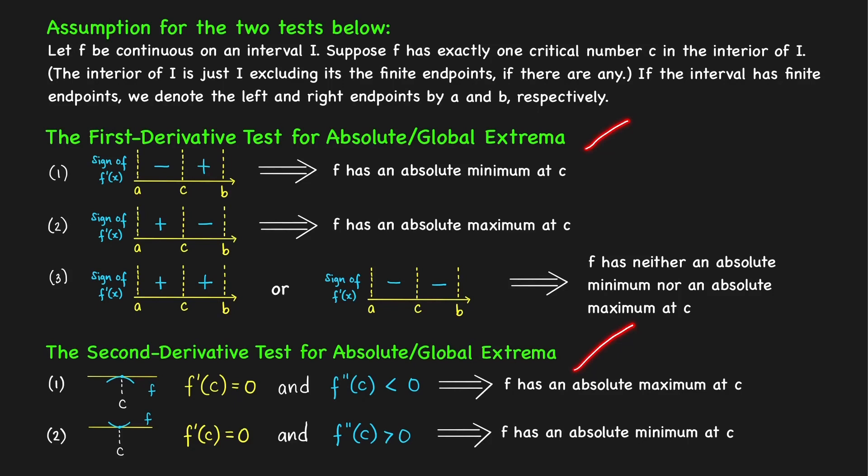These are actually the same tests that we use in finding local or relative extrema, but in our conclusion we now have absolute minimum or absolute maximum. In this case, we need to satisfy an additional assumption in order for our conclusion to be an absolute extrema instead of a local extrema.